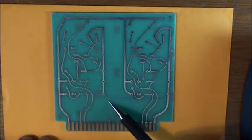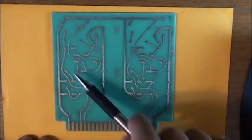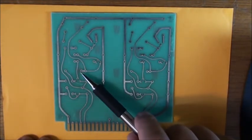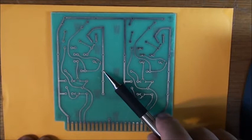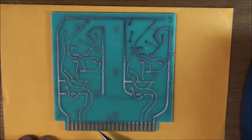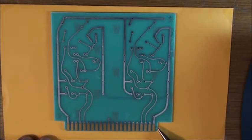You can see the traces. You can see the different pads where the components will come through and will be soldered. And over here on this side you see the fingers where this board will plug into another bigger assembly to make a complete electronic system.